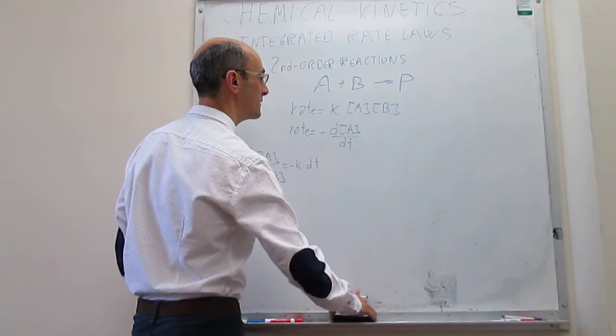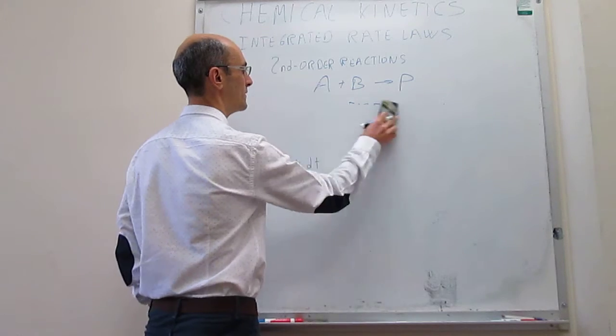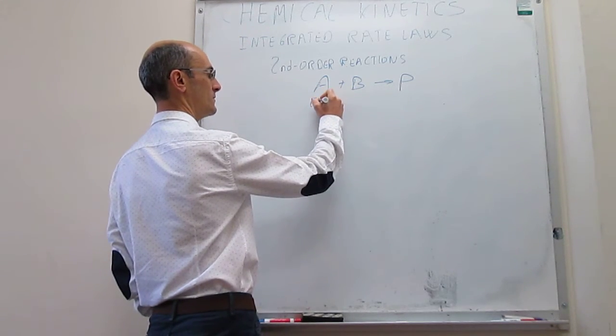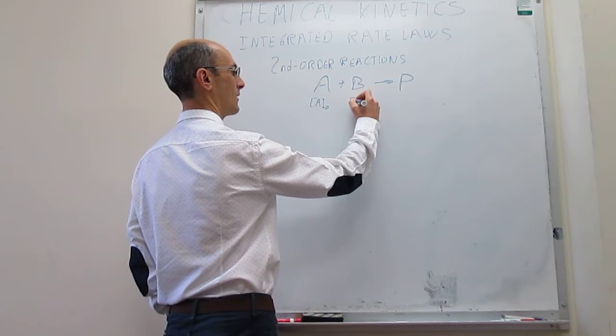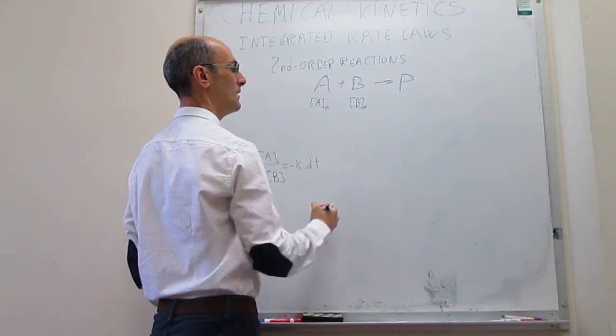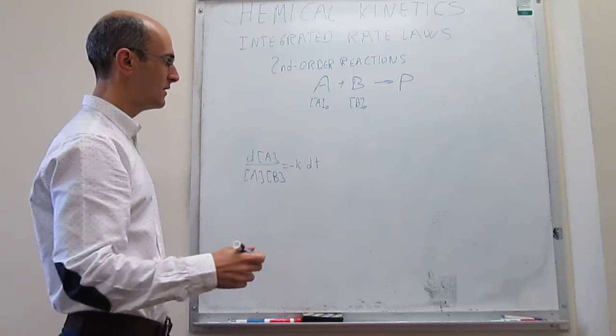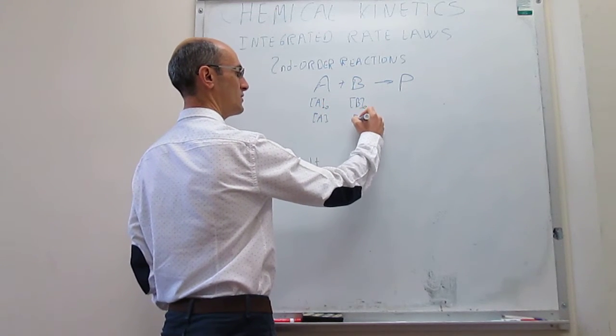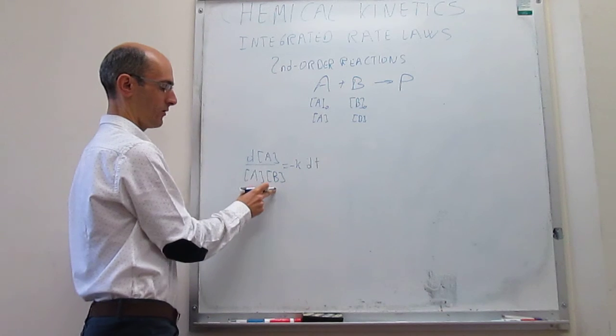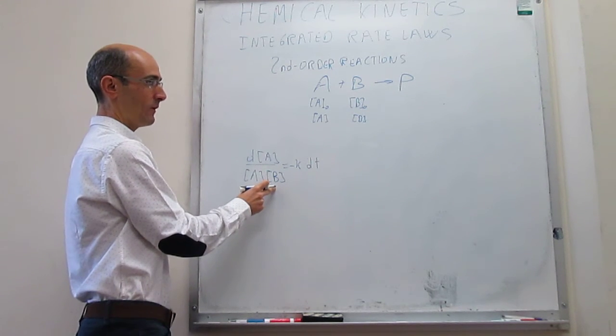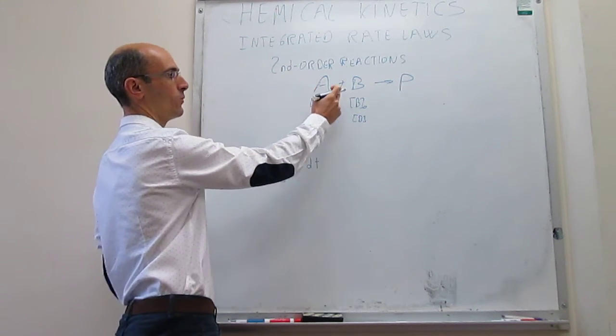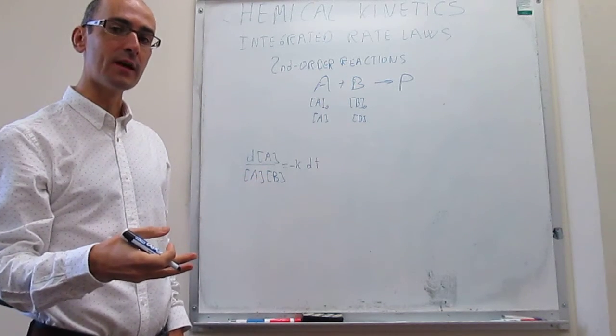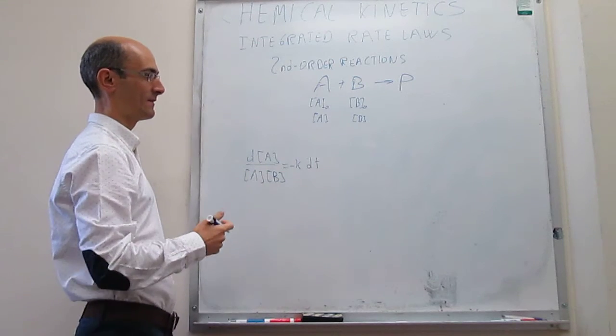However, we can take care of this issue by noticing the following. If we start the reaction with a concentration A sub-naught and a concentration B sub-naught, after some time has elapsed, what we'll have is that the concentrations will be A and B, which is what we have right here in this expression. But we can say that if the stoichiometric coefficients are 1 and 1, then the same amount of A and B have reacted in that particular time.